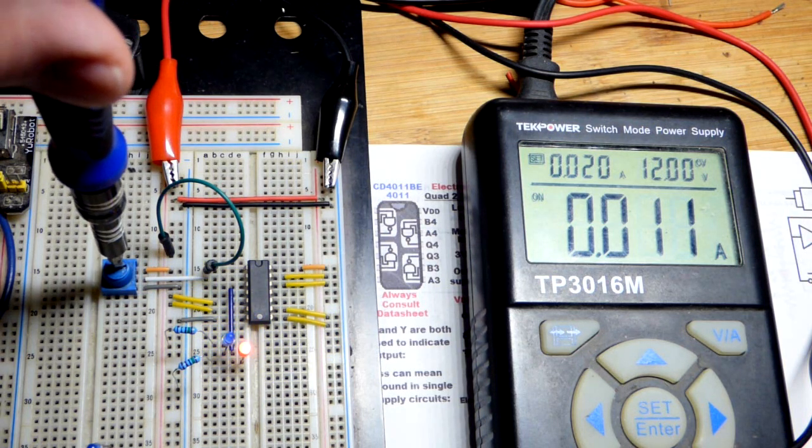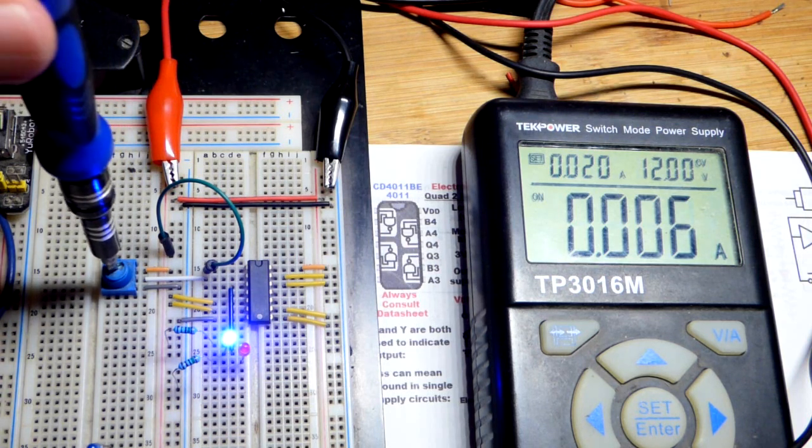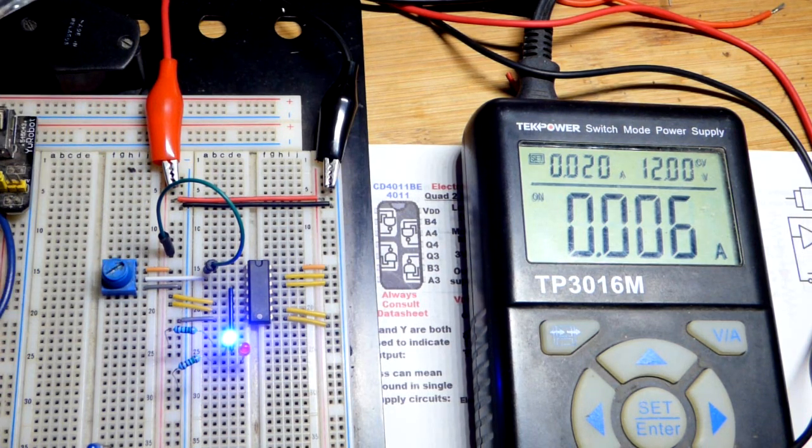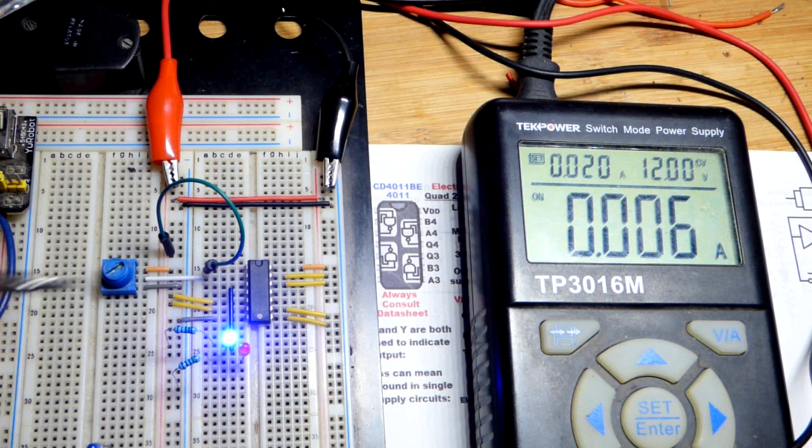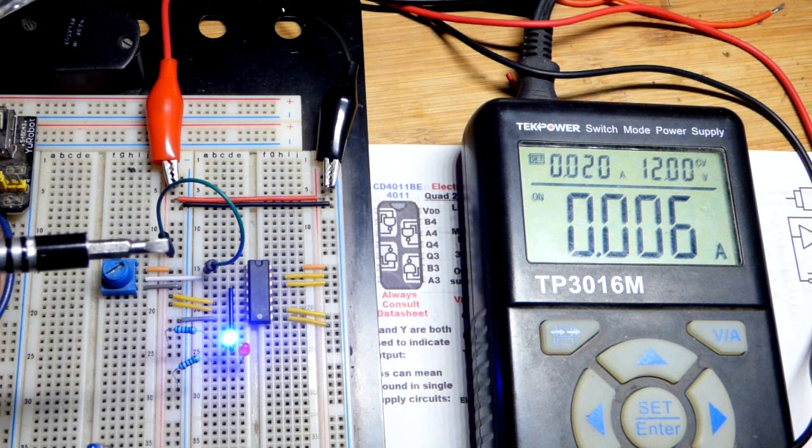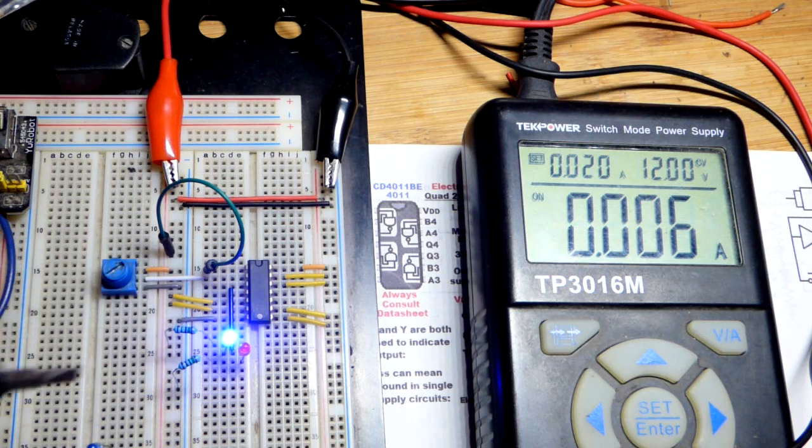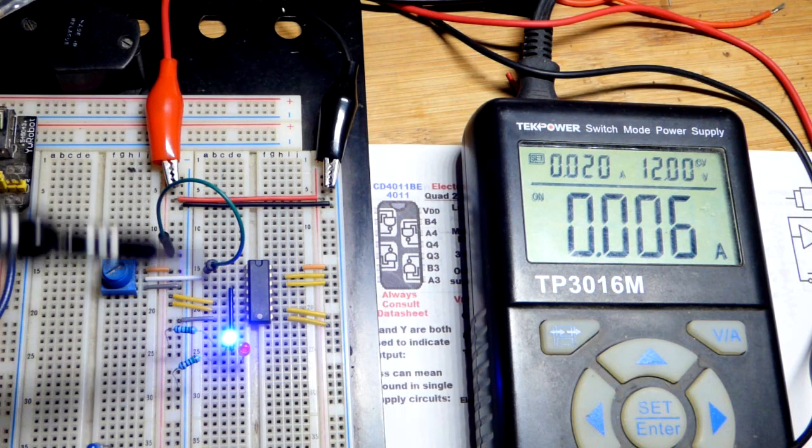There is a middle ground region though where they will both kind of light up right there. And so I think the output's kind of in an iffy state. Now we got two high inputs right there. Ideally you want usually digital circuitry that jumps instantly from either high to low or low to high. You don't want kind of middle ground region voltages.